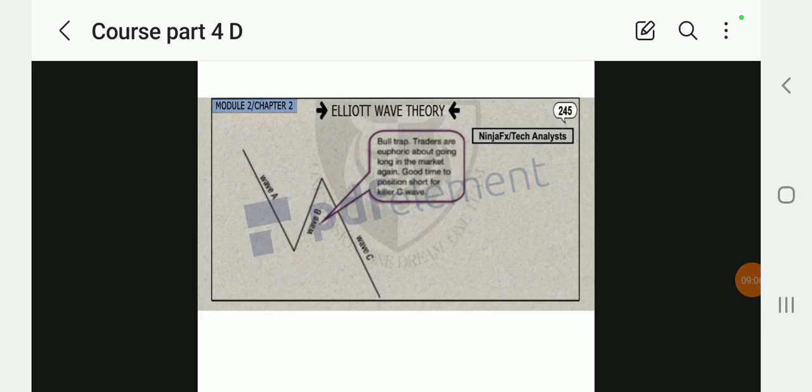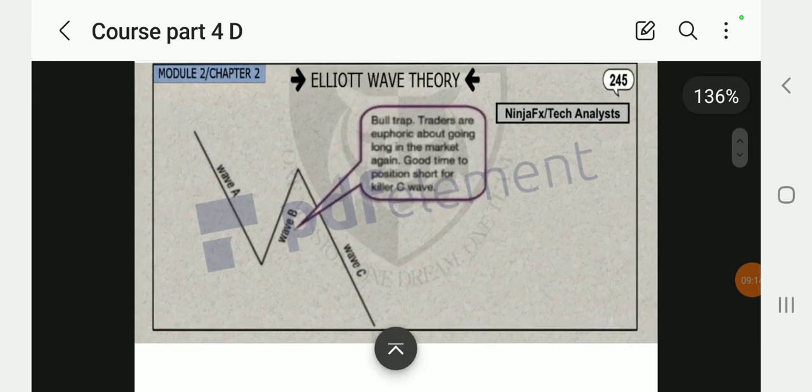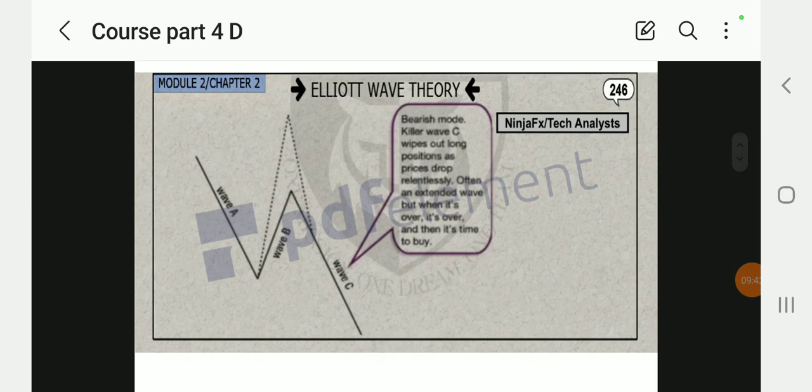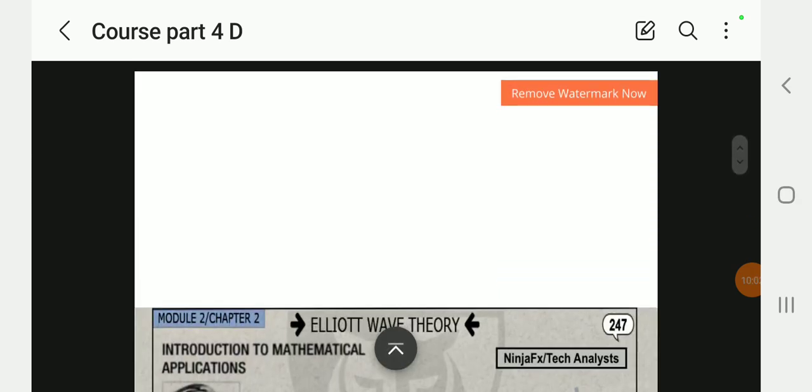Wave B: traders freak about getting long in the market again. Good time to position short for the killer C wave. At the top of the corrective wave, that's when you sell to join the market and continue the trend because there's no reversal pattern. In this case, bearish mode: killer wave C wipes out long positions as price dips relentlessly. Often an extended wave, but when it's over, it's over, and then it's time to buy. Price took out all the buyers and all the sellers are in profit.